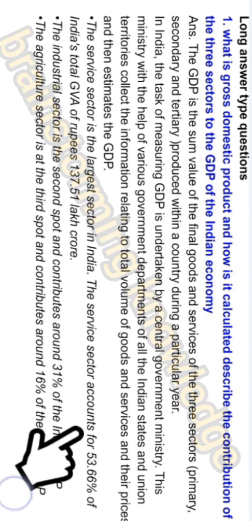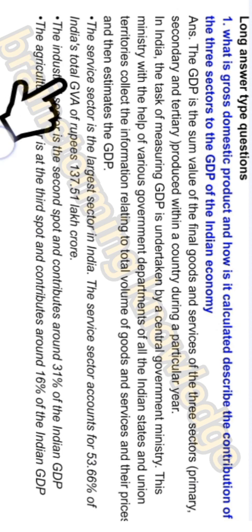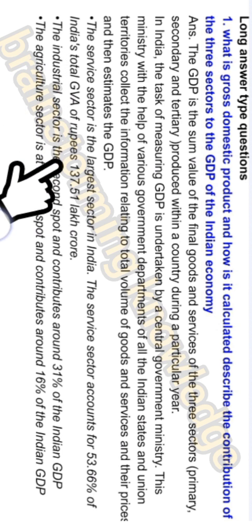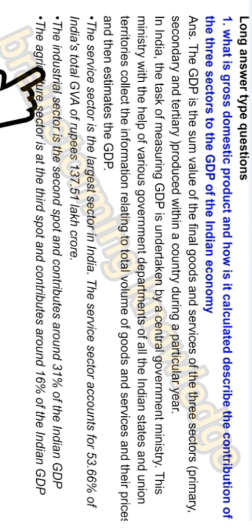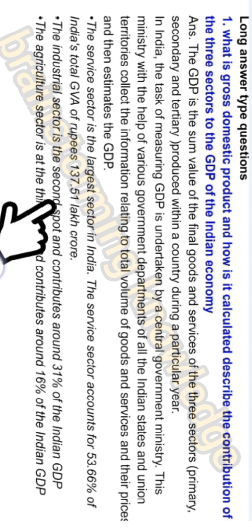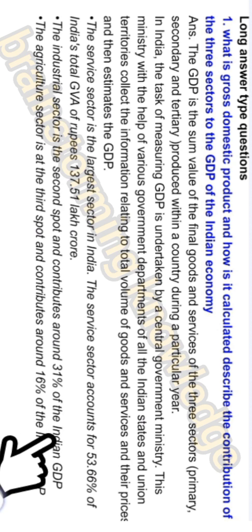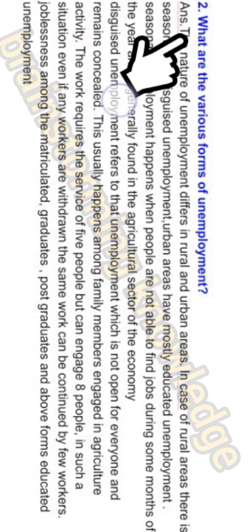Regarding the contribution of the three sectors to India's GDP: the service sector is the largest sector in India, accounting for 53.66% of India's total GVA of rupees 137.51 lakh crore. The industrial sector is second, contributing around 31% of Indian GDP. The agriculture sector is third, contributing around 16% of Indian GDP.